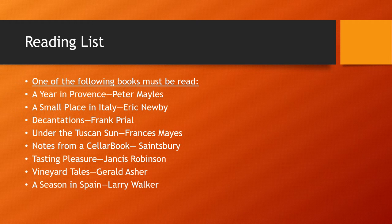Notes from a Cellar Book — Saintsbury Winery is actually named for the author of this book. He was one of the great wine collectors of 150 years ago. It's quite literally notes on the wines he drank and the foods he drank with them. You'll be surprised at how different those wines were from what we drink now. It gives you a very good idea of what life in Victorian England might have been like. It's a little dry, as it's just notes and comments, but it's a good little trip back in history.